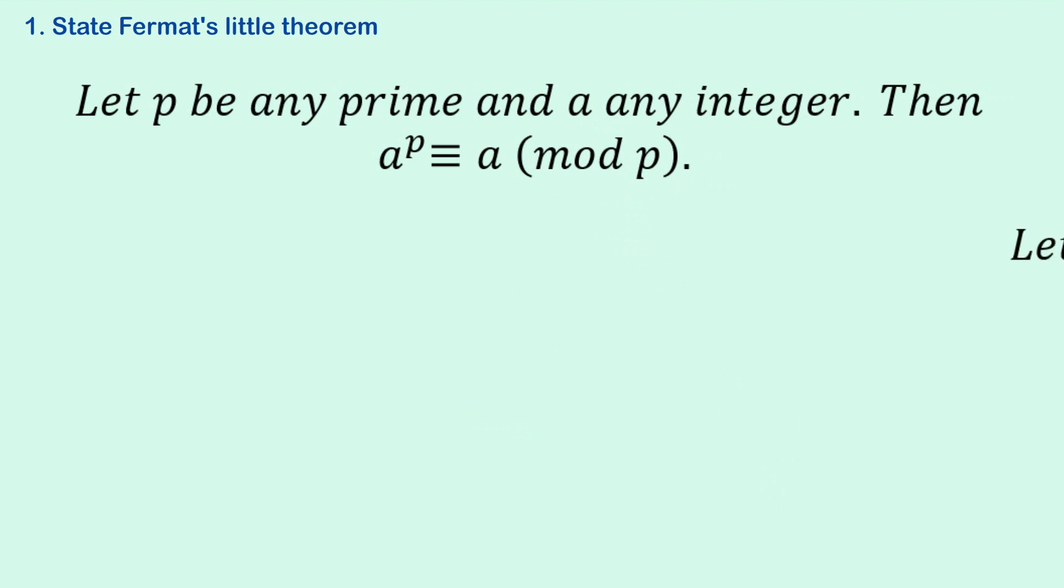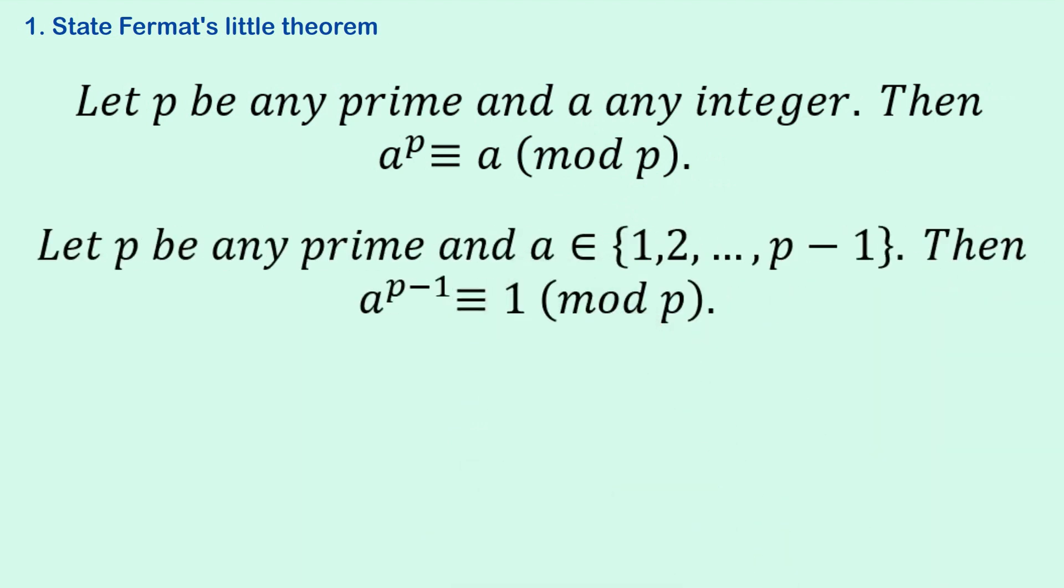Now, the one I did at university was this one. Let p be any prime and a a number between 1 and p minus 1. Then a to the p minus 1 is equivalent to 1 mod p.